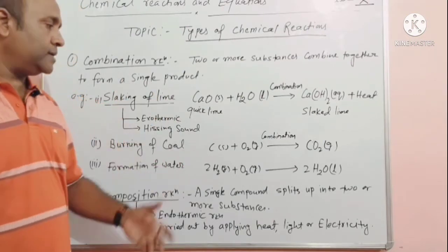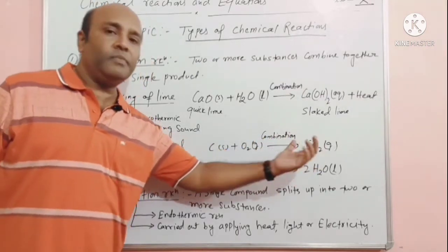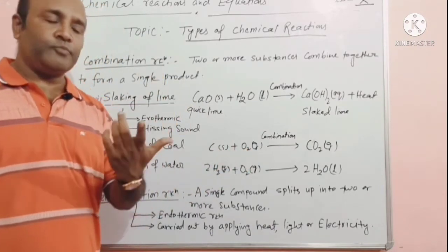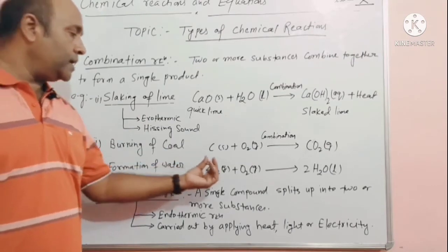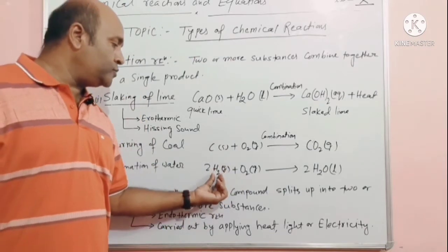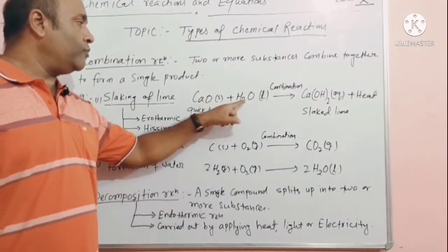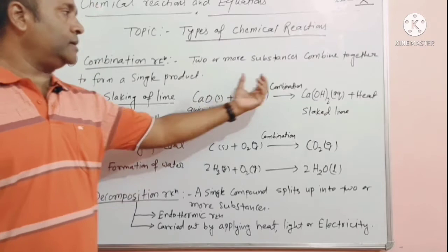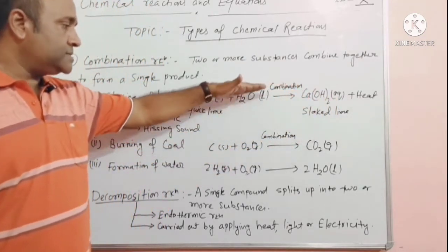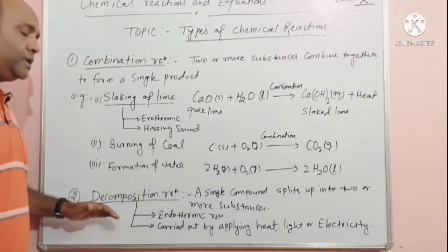Next is burning of coal — it is an example of combination reaction. Carbon and oxygen gas are combined together to form carbon dioxide gas, so two substances combine to form a single product. Similarly, in formation of water, hydrogen gas and oxygen gas combine to form water. And in slaking of lime, calcium oxide and water combine to form calcium hydroxide.